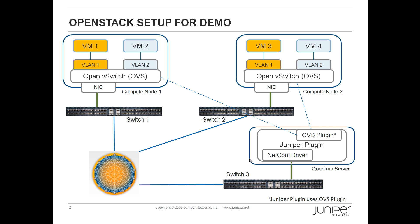For the demo, we will be creating two virtual machines, one on each compute node. Then we will do ping tests to show the network configuration on these virtual machines. The Juniper Quantum plugin uses VLANs to provide layer 2 network for the OpenStack tenants. We are also using OpenVSwitch to support the virtual network.